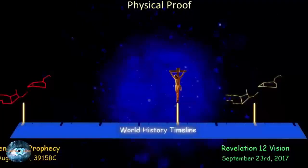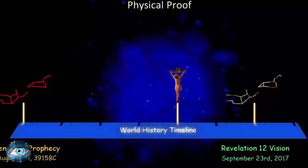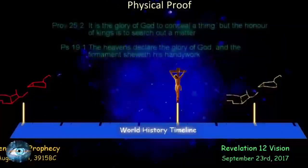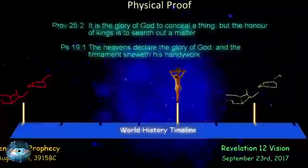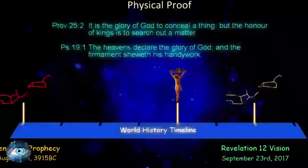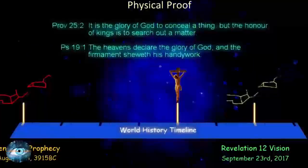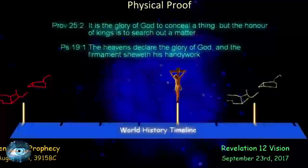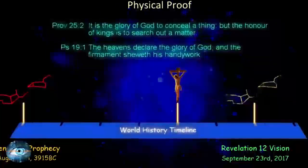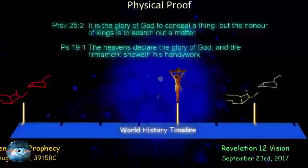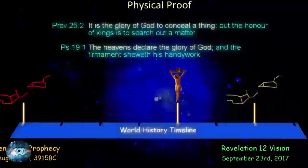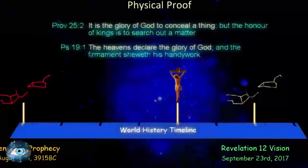I believe the following two passages confirm this, and that the heavens contain a hidden message that we will uncover as we continue. Proverbs 25 verse 2: It is the glory of God to conceal a thing, but the honor of kings is to search out a matter. Psalms 19 verse 1: The heavens declare the glory of God, and the firmament showeth his handiwork. These two passages tell us that it is God's glory to conceal information, and that the heavens play a part in telling us what information God has concealed.